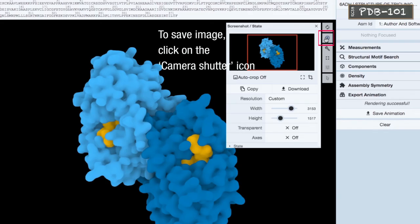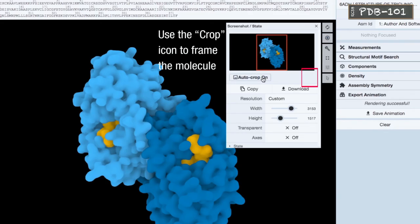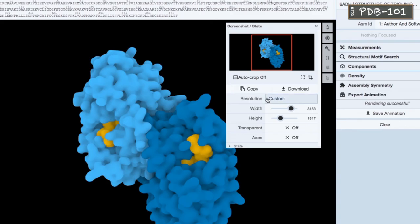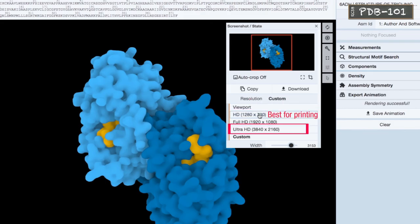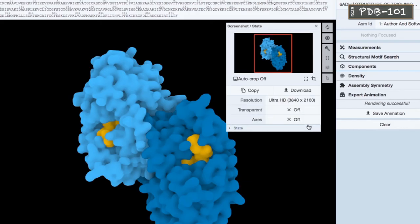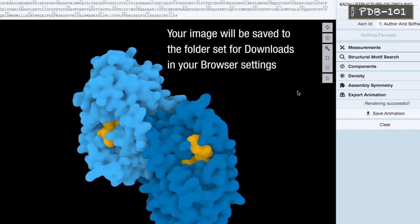To save image, click on the camera shutter icon. Use the crop icon to frame the molecule. Be sure to adjust the resolution to your needs. Click the download button to save image. Your image will be saved to the folder set for downloads in your browser settings.